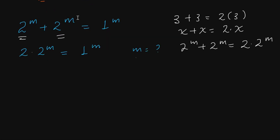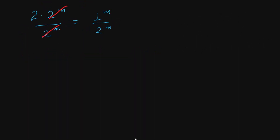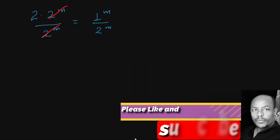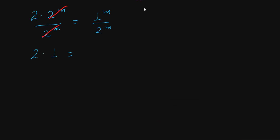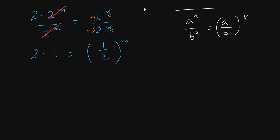m is equal to — let's simplify by looking at this as a linear equation. Dividing both the left side and right side by 2 to the power of m. The left side divided by 2 to the power of m — the 2 to the power of m cancels out on the left side.